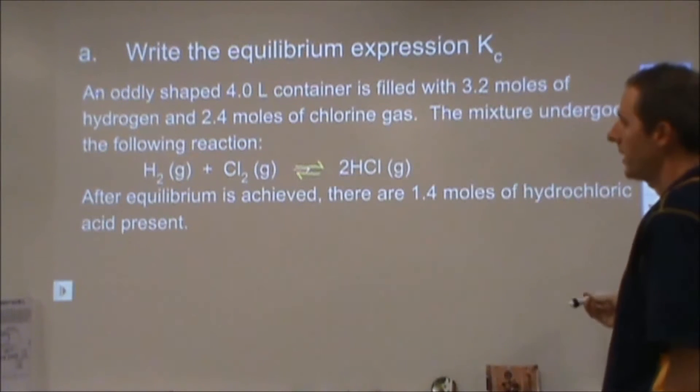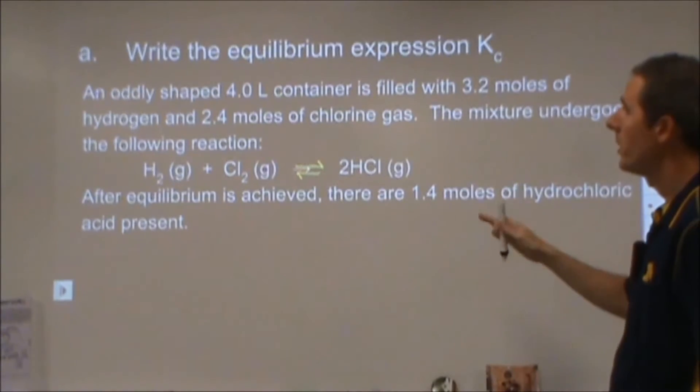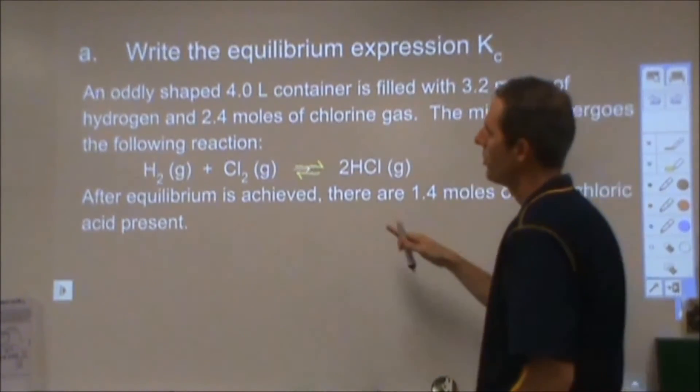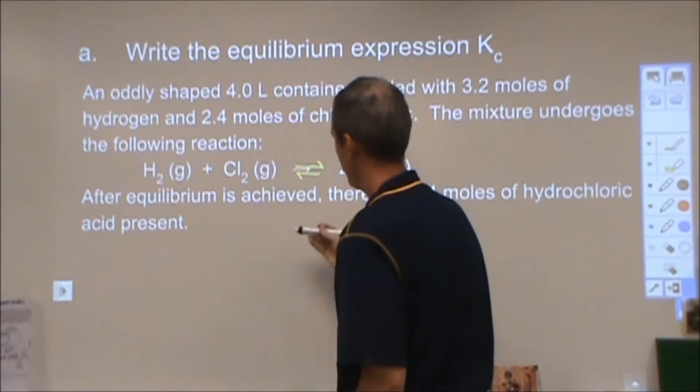And then it says after we get to equilibrium there's 1.4 moles of hydrochloric acid present. Write the equilibrium expression Kc. So lots of information here, most of which we're not going to get into until later. For the K expression, all I really need is the chemical reaction, so I'm going to start with that.